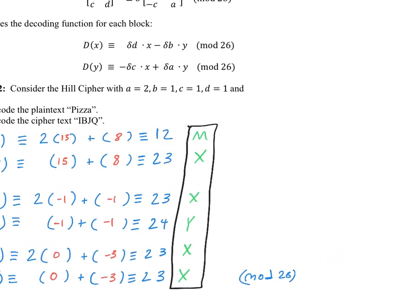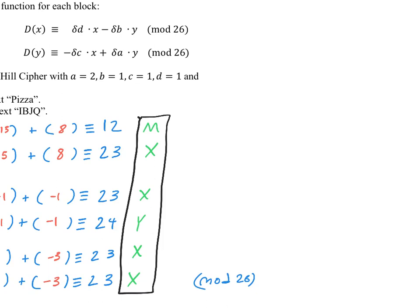Let's do some decoding now. So now we're going to play the role of the receiver, and we've received the message I, B, J, Q. Again, we decode block by block. So I've separated the first block here and the next block there.